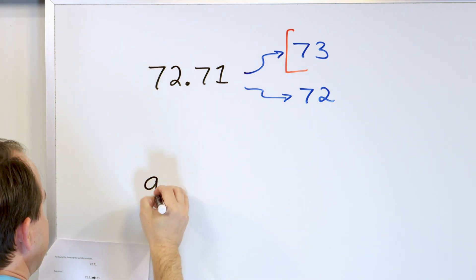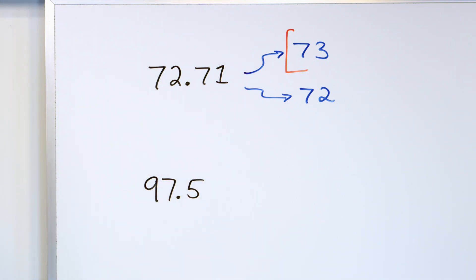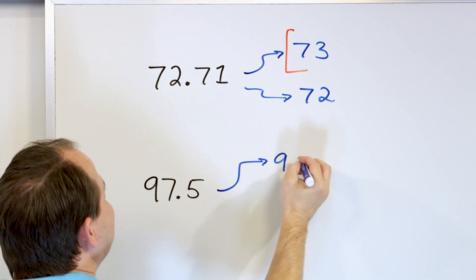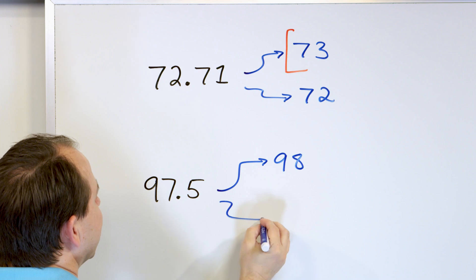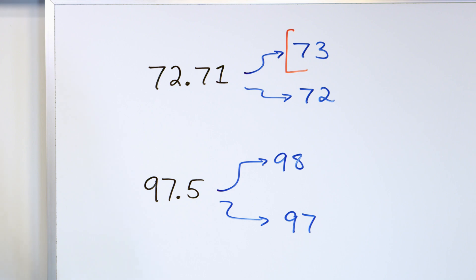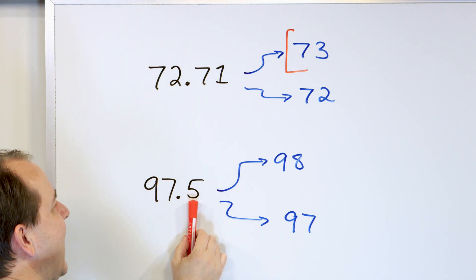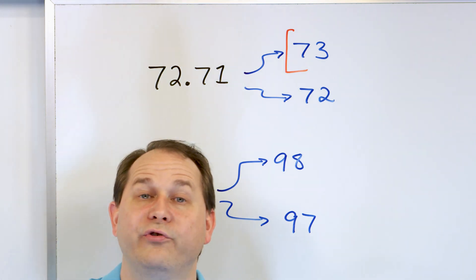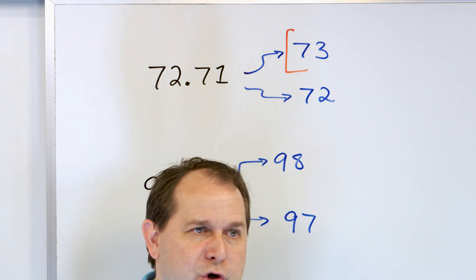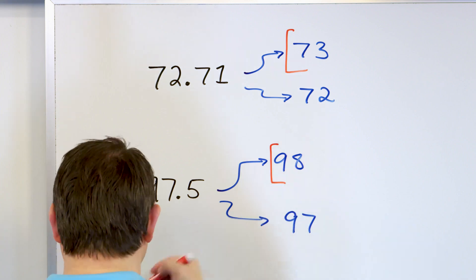Next problem: 97.5. Rounding to the nearest whole number, this can either go up to 98 or round down and stay at 97. To figure it out, look next door beyond the whole number into the first digit of the decimal — it's a 5. Remember, if you have a 5, 6, 7, 8, or 9, you go up. Since we have a 5, we're rounding up, and the answer is 98. If you have something smaller than 5, you round down.